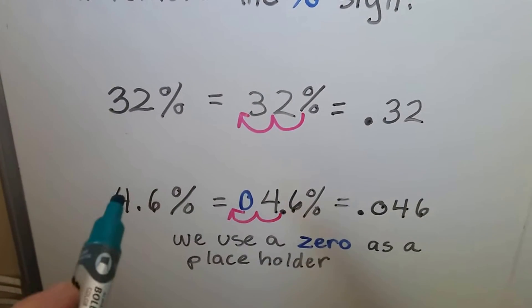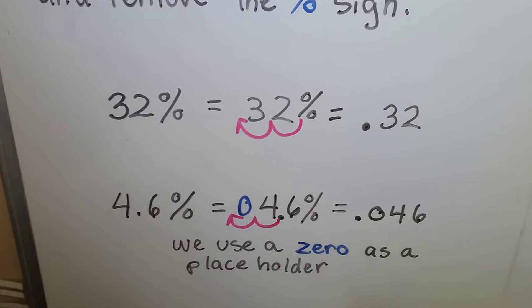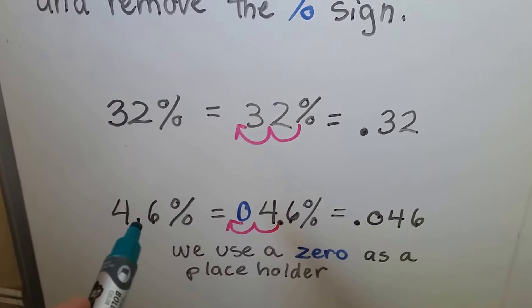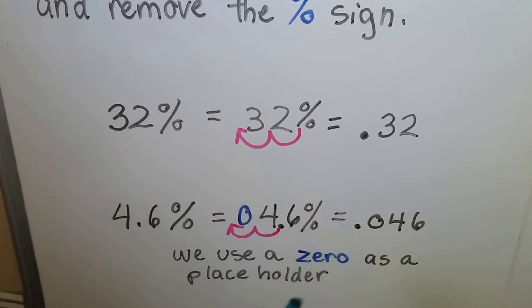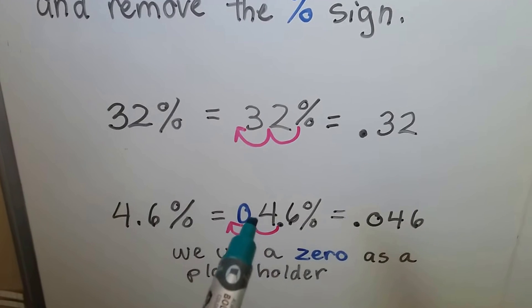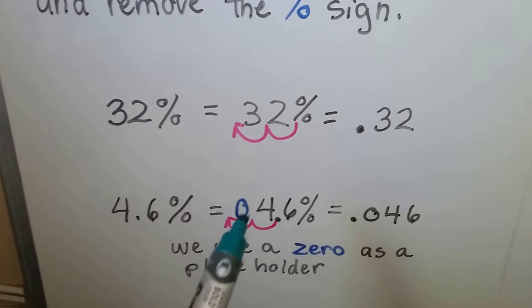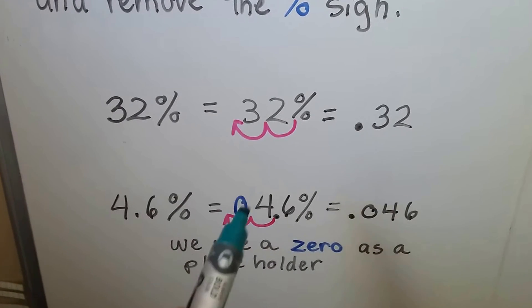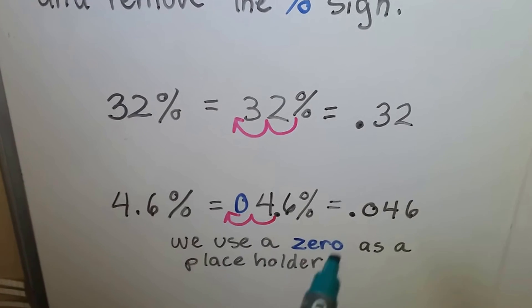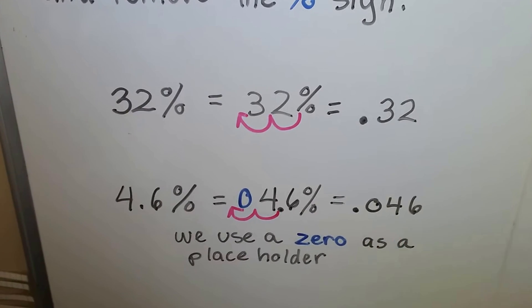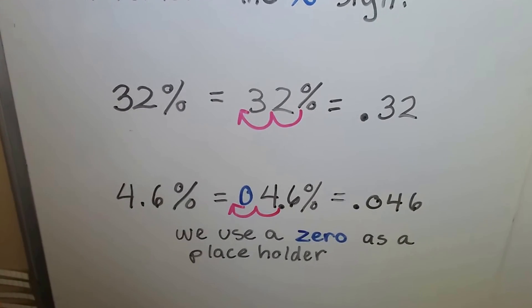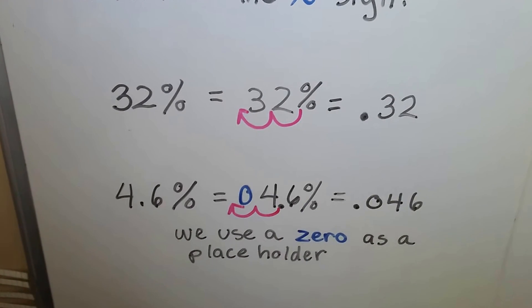If we have 4.6%, we start from where the decimal point is. We hop over two places to the left, one, two. That leaves an empty space there. We need to put a zero as a placeholder. We end up with 0.046. That's 46 thousandths. You just drop off the percentage sign then.